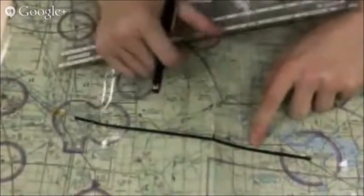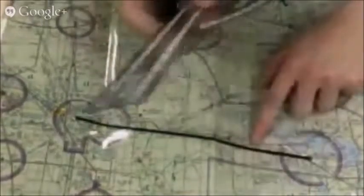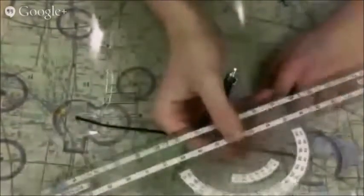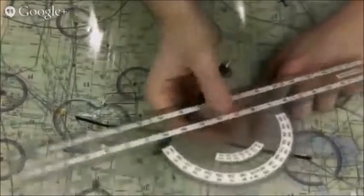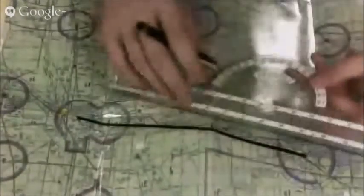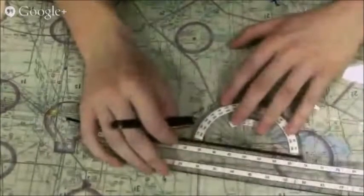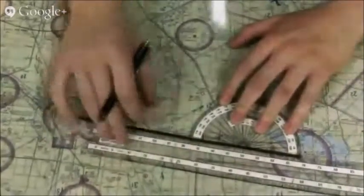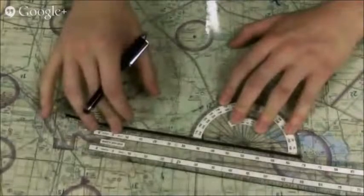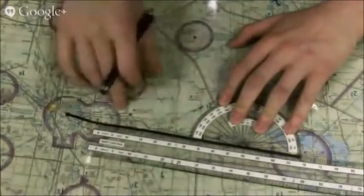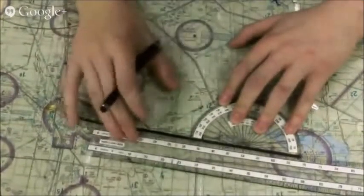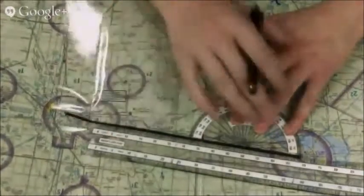To find this, you'd want to line up your plotter. In the plotter, you have a dot right in the middle. You'd want to line that up with your intersection. And then after that, you'd want to line up the edge wings of the plotter with your course so it correctly finds true course.